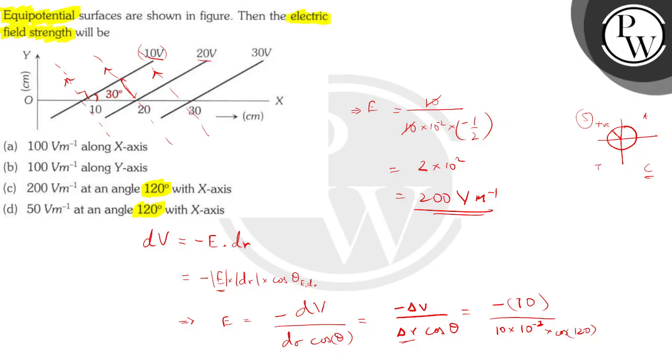This angle is 90 degree and this angle is 30. So the total angle is going to be 120 degrees with the x-axis. So as you can see, the option C matches this scenario perfectly. 200 volt per meter at an angle of 120 degrees with the x-axis.